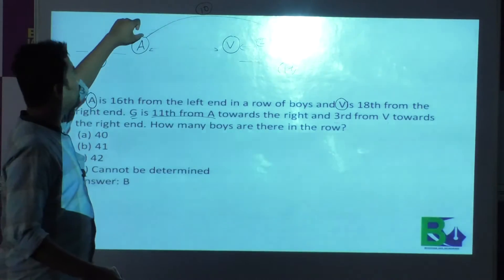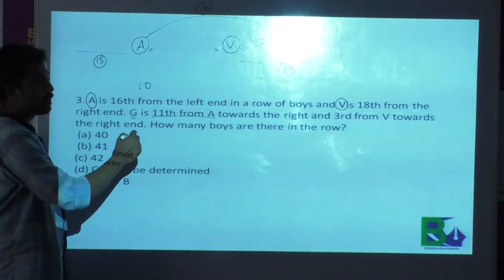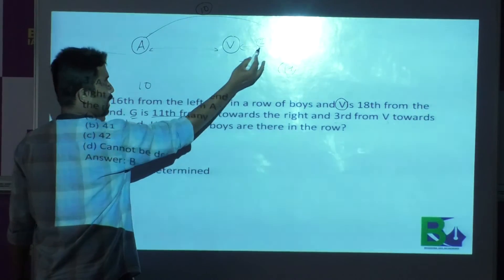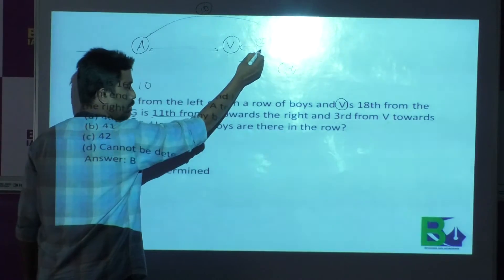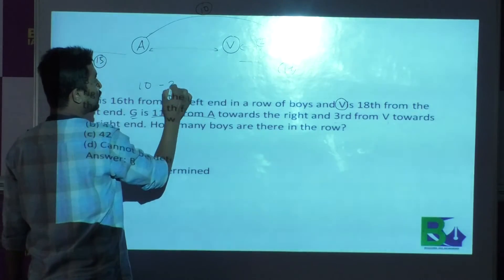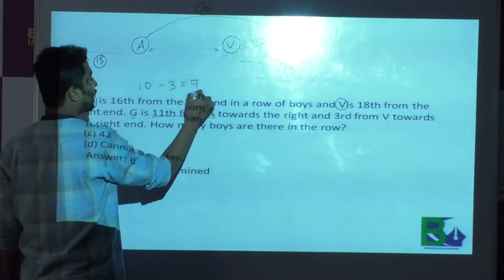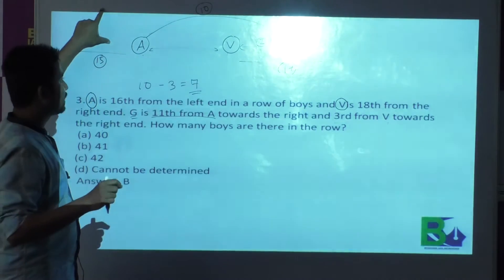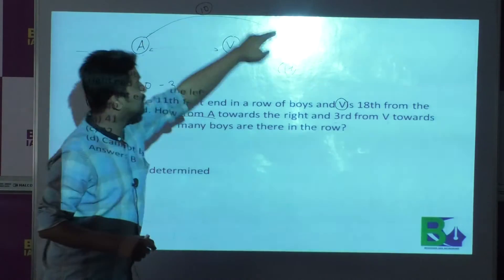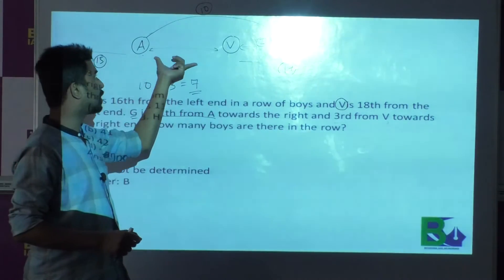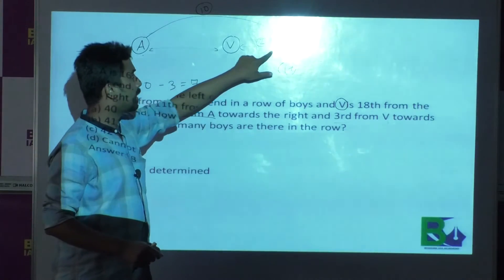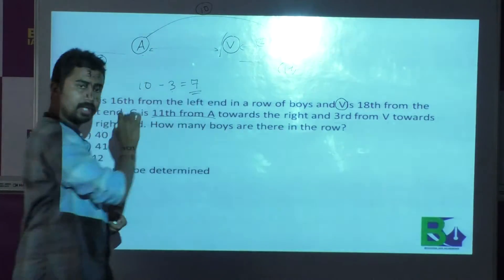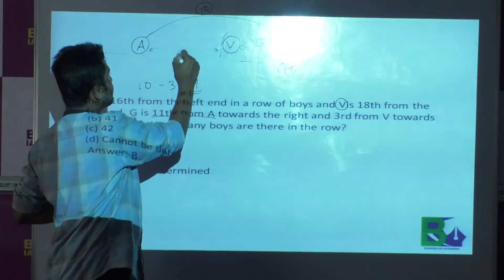Our job is to find out how many persons are between A and V. Total persons between A and Z is 10. By including V, persons between V and Z is 2, so including V that becomes 3. Therefore persons between A and V become 7. So there are 7 persons between A and V.